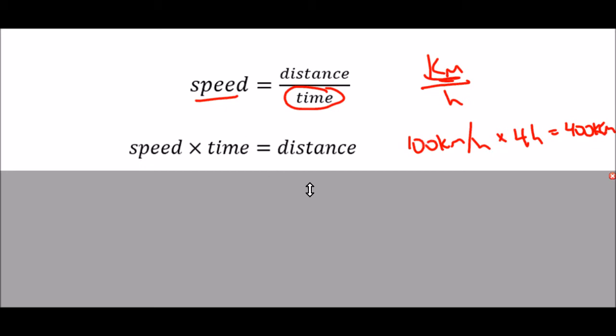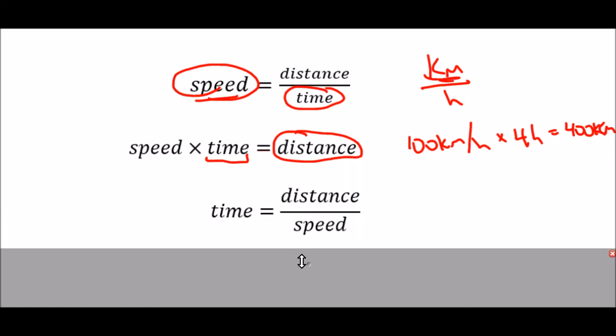And then if I rearrange again, so here I have an equation for speed, here I have an equation for distance. So if I rearrange again, I'm going to want to now isolate time. So to isolate time, I'm going to divide both sides by speed. And that gives me this equation. Time is distance divided by speed.